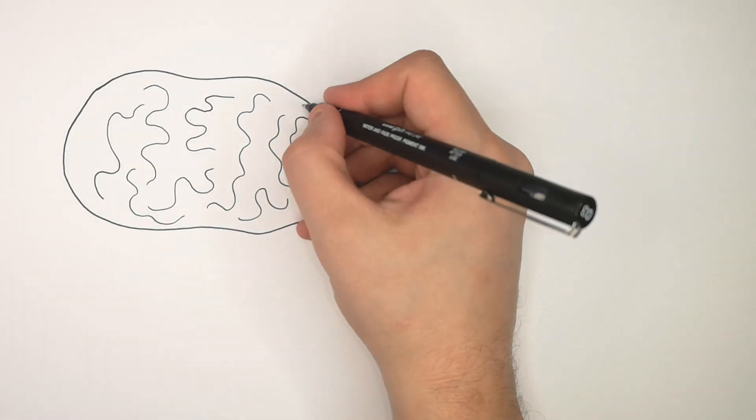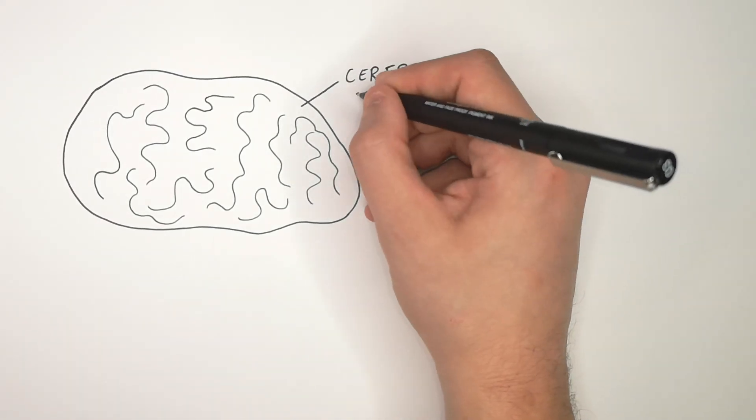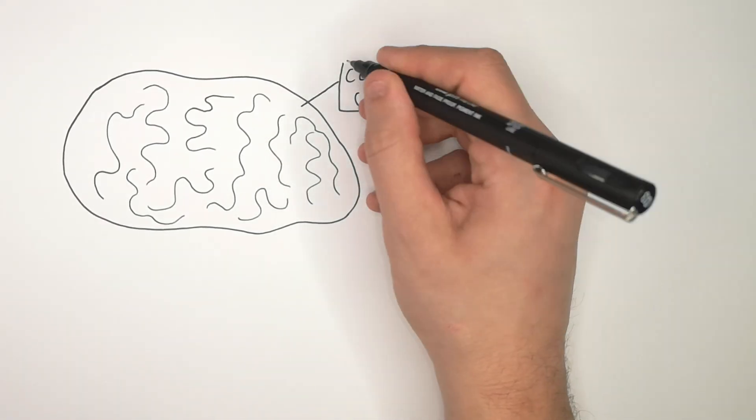The part of the brain that we all recognize is called the cerebral cortex. So this is the cerebral cortex of the brain.